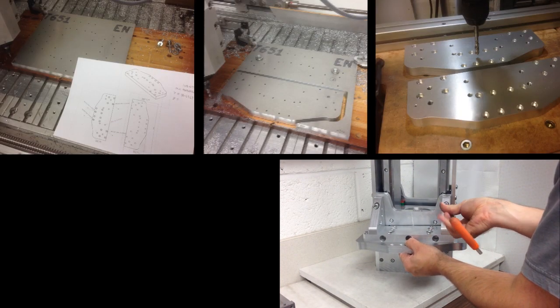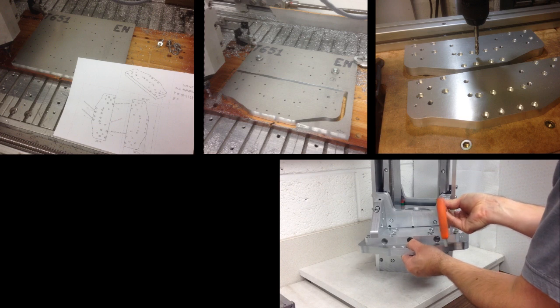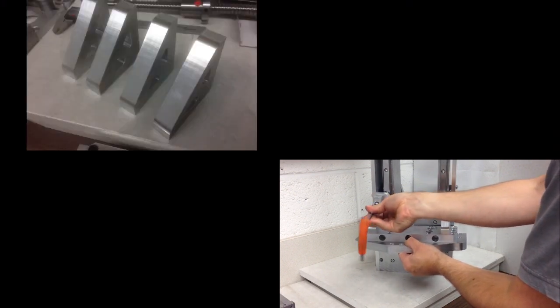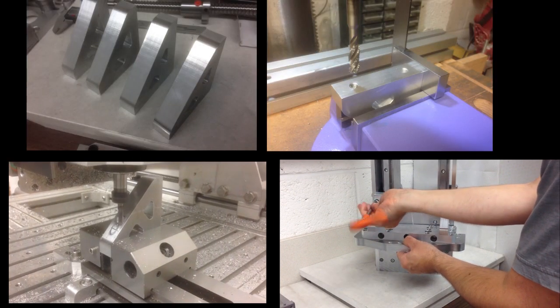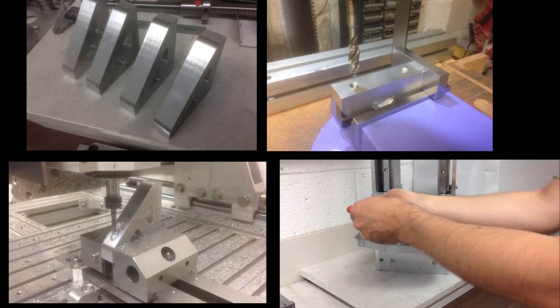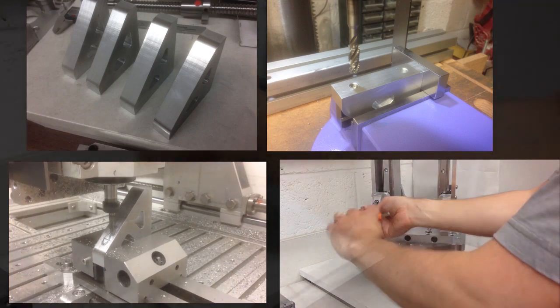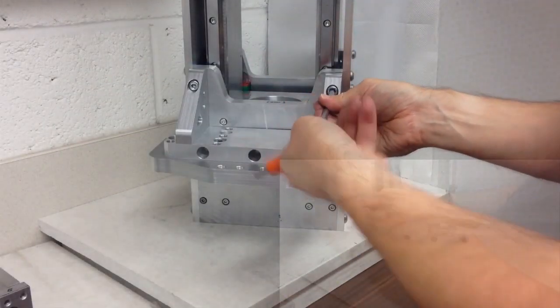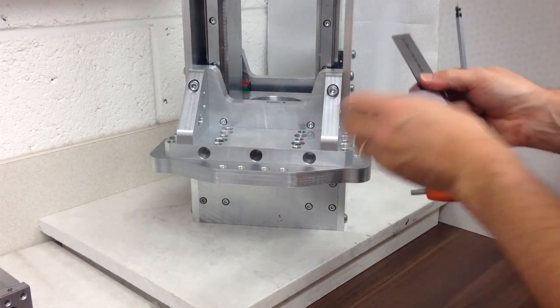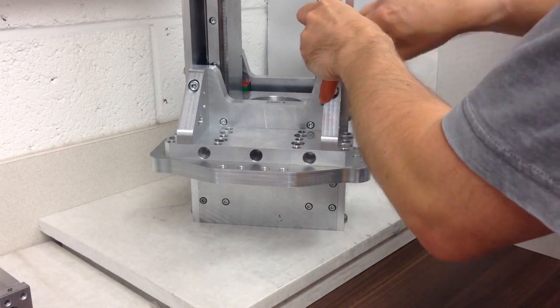So here we are putting the side pieces on now. There's two of these, one this side and then you'll see one in a moment the other side. And the bit I've got in my hand, you can see there's two plates, there's one there and then there's one above it. And the idea of this is this allows you to level, level the whole axis.